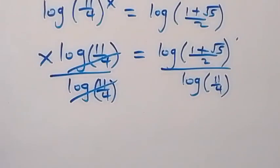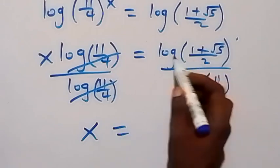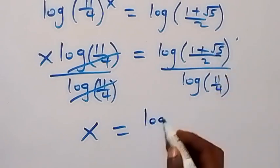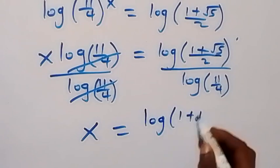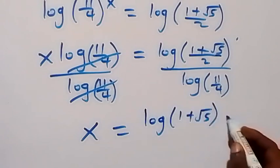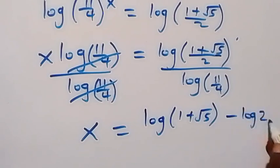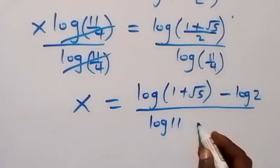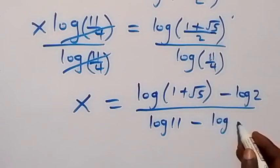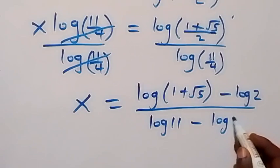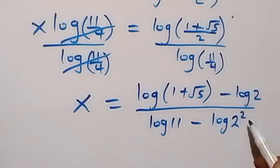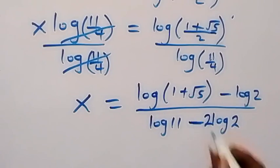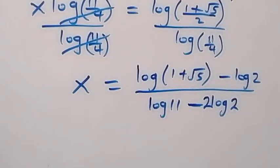We can separate the logs: x equals [log(1 plus root 5) minus log 2] over [log 11 minus log 4]. Now log 4 is the same as log 2 squared, and from the law of logarithms that power comes to the front, giving 2 log 2. So the denominator becomes log 11 minus 2 log 2.